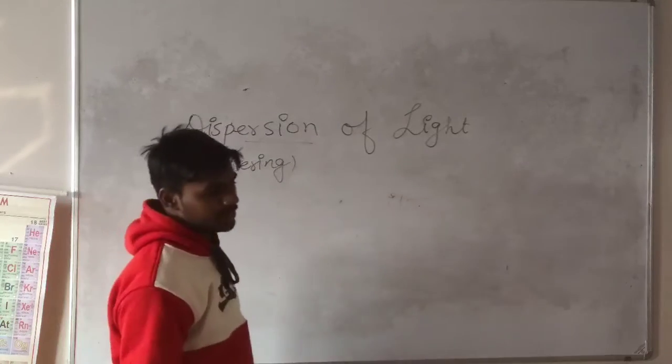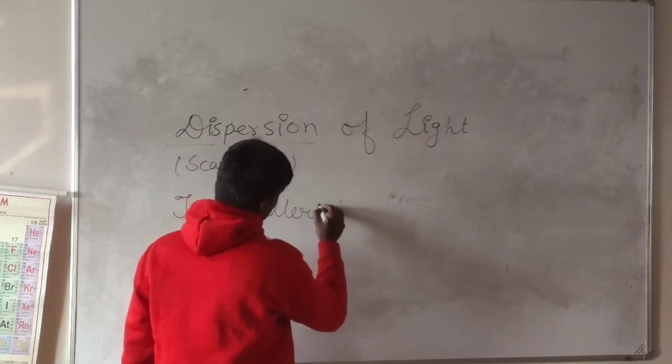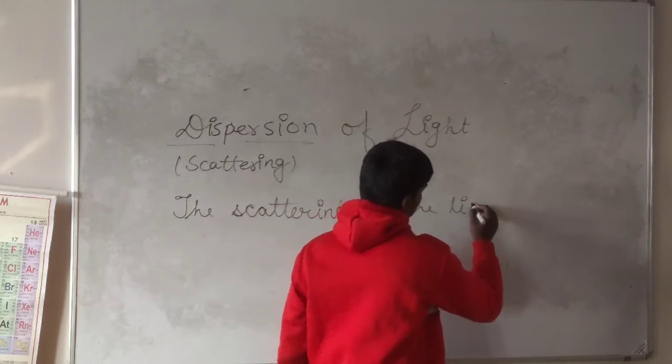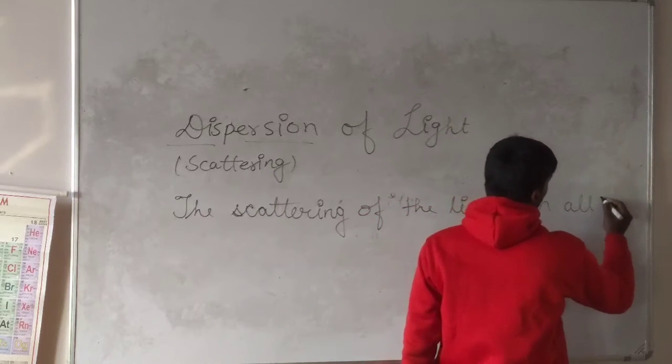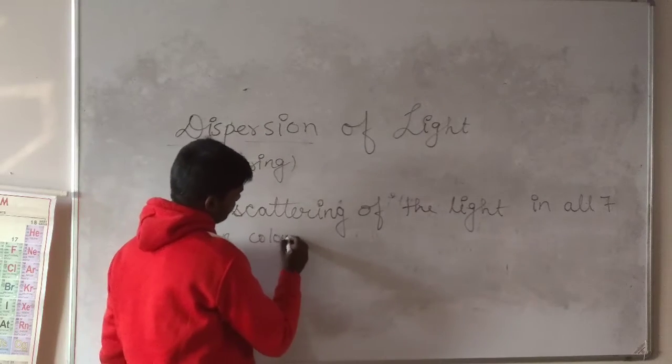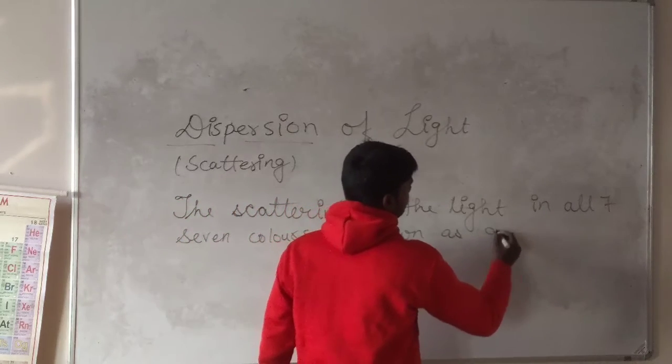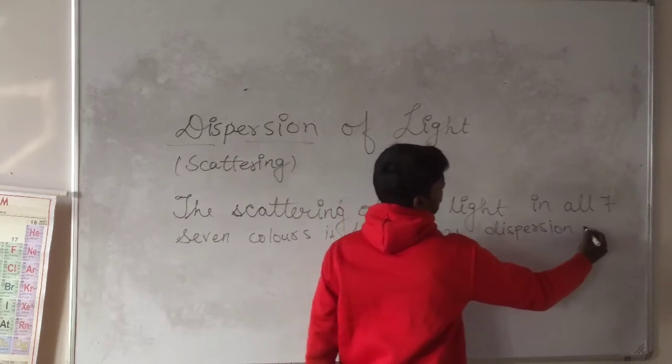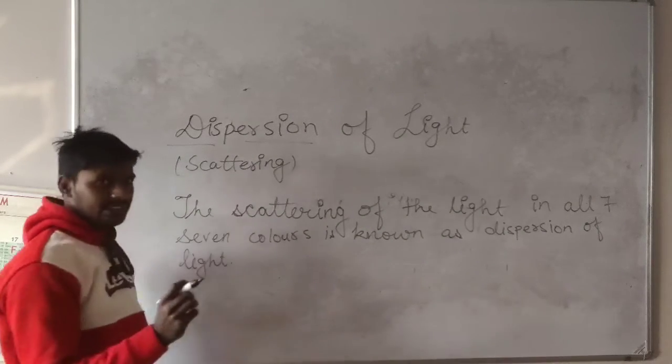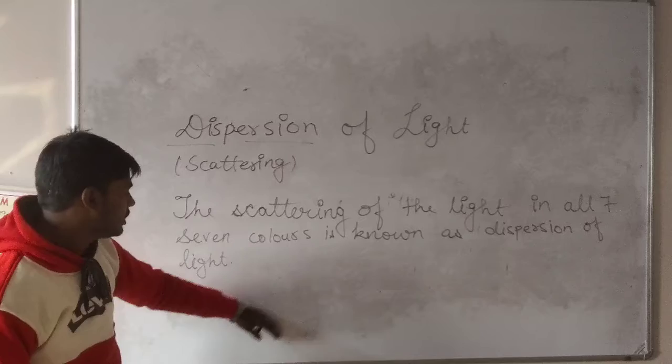So now we are going to discuss what is the dispersion of the light, the scattering of the light. The scattering of the light in all seven colors is known as dispersion of light.